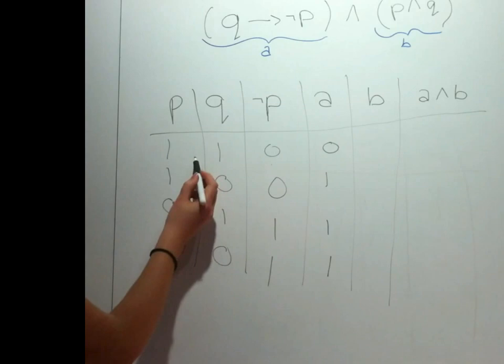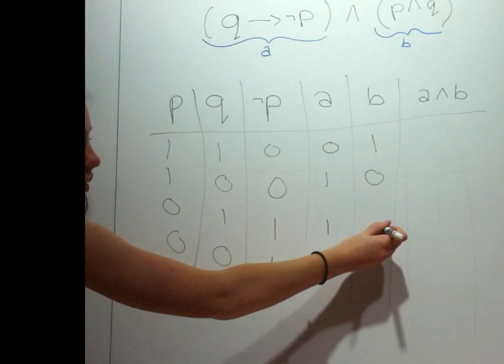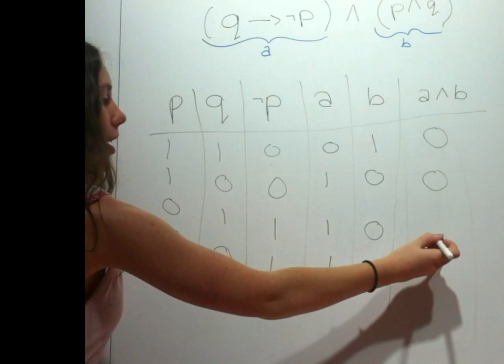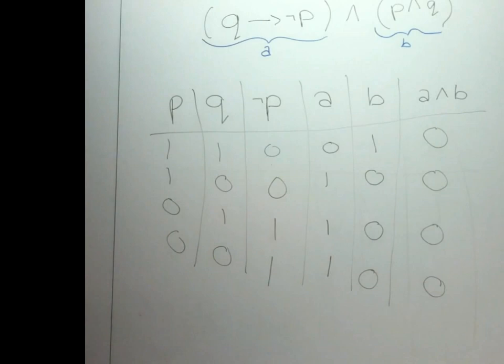Now, we look at the whole proposition A and B: false and true is false, true and false is false, true and false is false, and true and false is false. Therefore, the proposition is a contradiction as all the values are false.